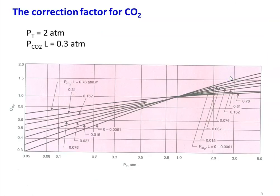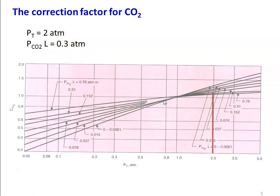For the correction factor for CO2, the x-axis is total pressure. The total pressure is 2 atmosphere and P_CO2 × L = 0.3. Drawing a vertical line at 2 atmosphere and reading for P_CO2 × L = 0.3, the correction factor C_CO2 = 1.1.